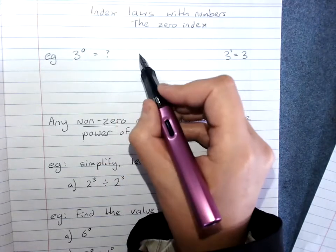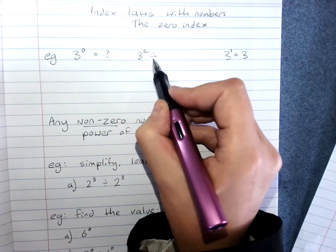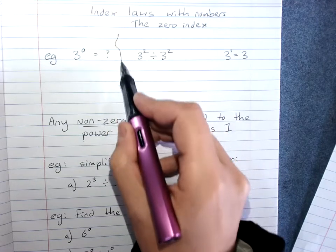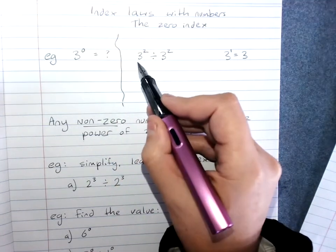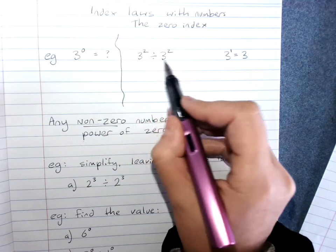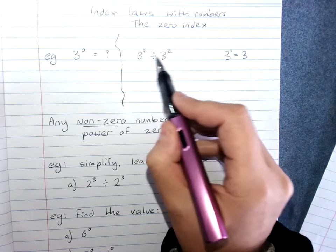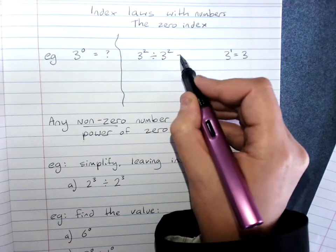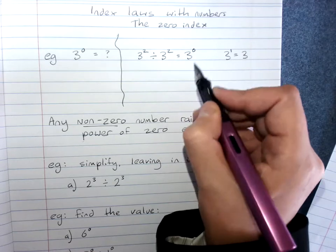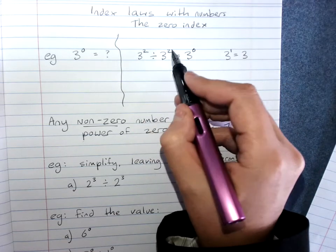If I had 3 squared divided by 3 squared, I'm just going to make up a new question here. We know from the division rule, we're dividing products of the same base, that I'd subtract the powers. I'd get 3 to the power of 0 if I did this. 2 minus 2 is 0.